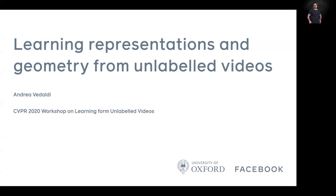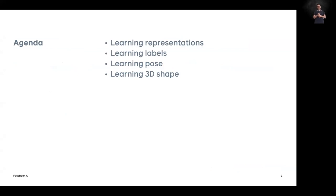Thank you very much for inviting me to speak at your workshop. It's a real pleasure to be here. What I'm going to talk about today is some of the work we have done recently at Oxford and Facebook on learning representations as well as geometry — 2D and 3D — from unlabeled videos and images. I'll go through a set of works covering learning different aspects of vision, from low-level representations to shape, by increasing the level of abstraction.